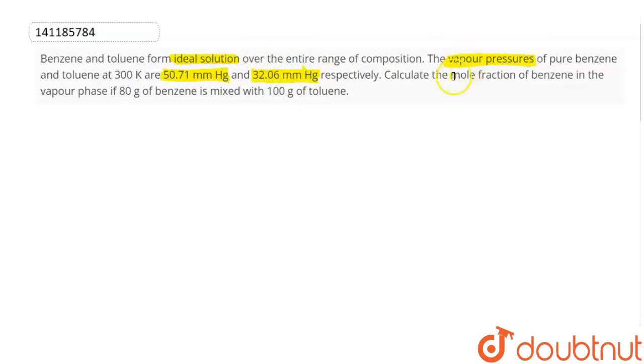Calculate the mole fraction of benzene in the vapor phase if 80 grams of benzene is mixed with 100 grams of toluene. You have made a solution in which you took 80 gram benzene and 100 grams toluene.